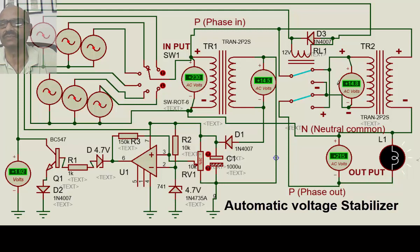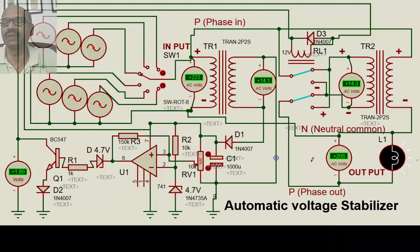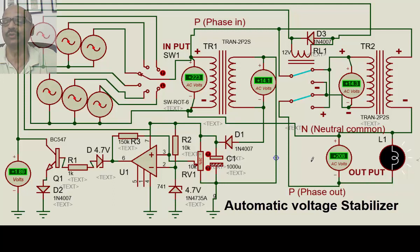Continuing the buck operation: at 230 V input, minus this secondary voltage gives around 215 V. A question arises: if the supply is 230 V, which is within safe limits, why is the output only 215 V? It is because in automatic voltage stabilizers, you cannot always control the exact output — it will remain within a certain range. For example, feeding 223 V and getting 208 V is acceptable.